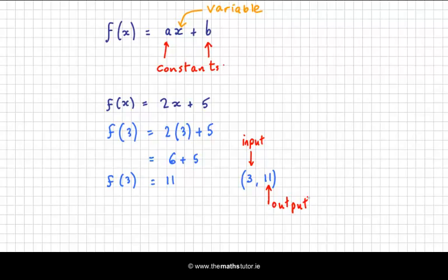So some of the key terms that you need to know are the x in your function is your variable. Now this is a linear function. Here's an example of a linear function. Any function of the form ax plus b is a linear function. And if we plot it, it will be a straight line. That's why it's called a linear function.